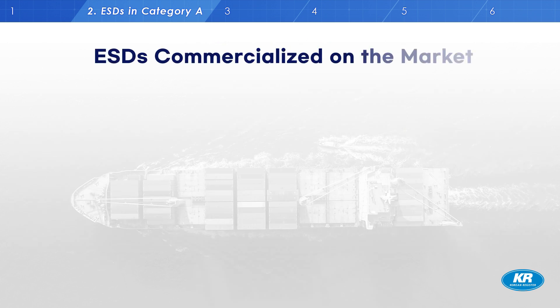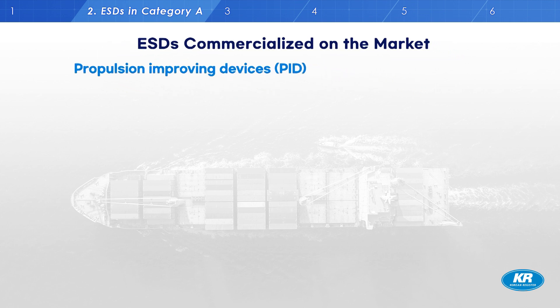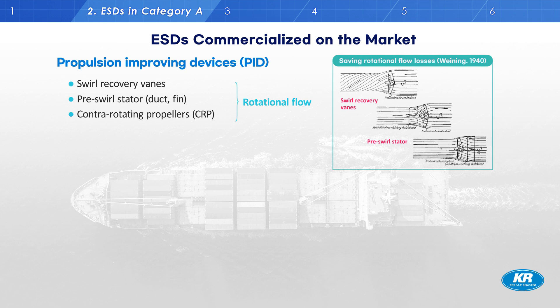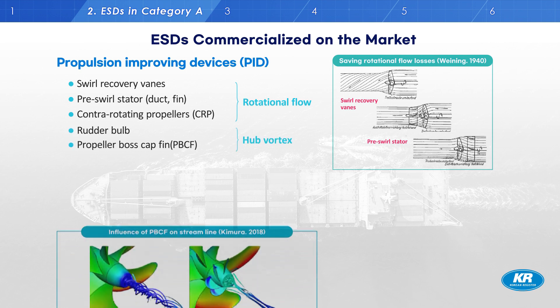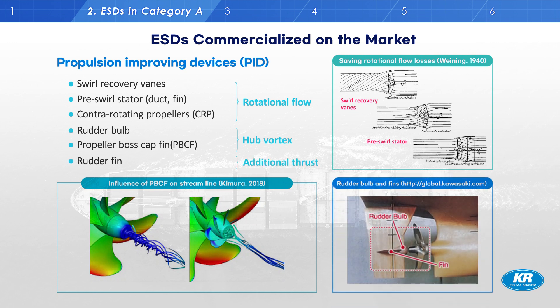Now I will introduce propulsion-improving devices, so-called PIDs. There are many PIDs on the market. These devices are designed to be installed near the propellers or near the rudder in order to increase propulsion power. Some devices prevent propulsion loss due to rotational flow occurring behind the propeller — for example, swirl recovery vanes, pre-swirl stators, and contra-rotating propellers. Rudder bulbs and propeller boss cap fins can prevent the generation of a hub vortex behind the propeller, reducing propeller energy loss. Rudder fins can also convert lift force to thrust and increase power performance.